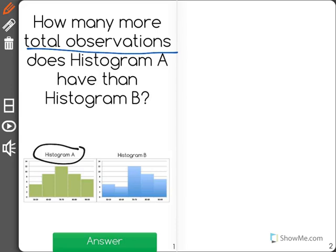Histogram A, 50 to 59, I see 5, 60 to 69 has 9, 70 to 79, 12, and so on and so forth.